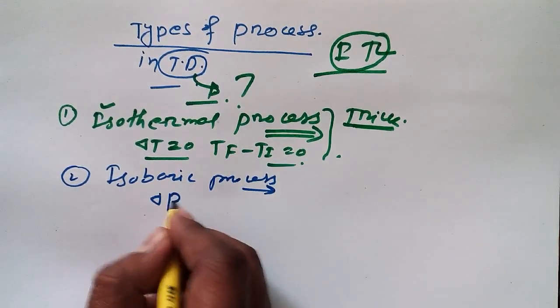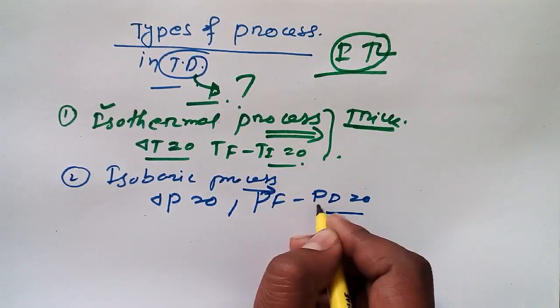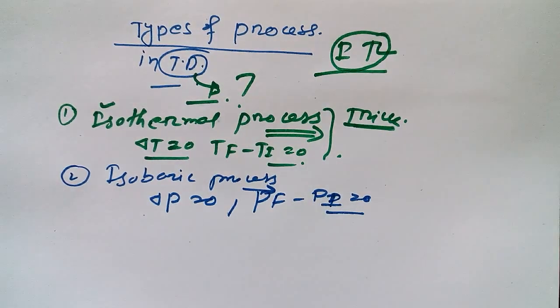In this process we know Delta P equal to zero, and like the same, P final minus P initial is equal to zero. So how you can remember this process?